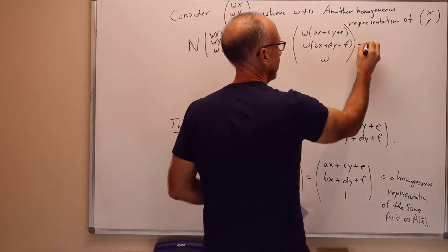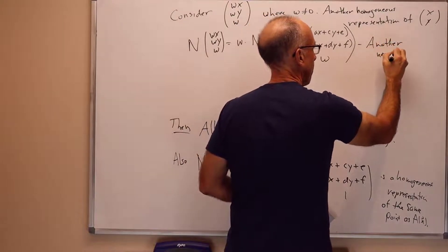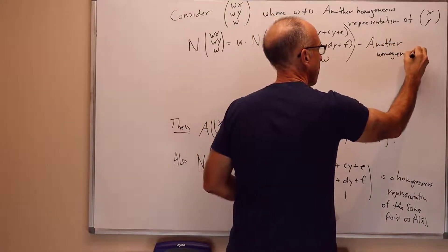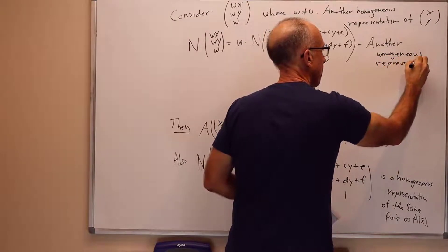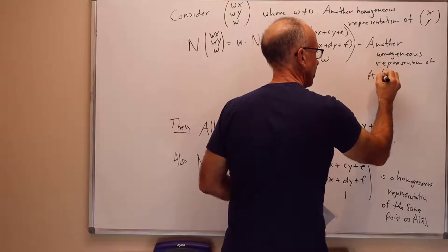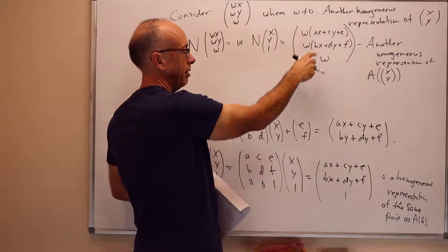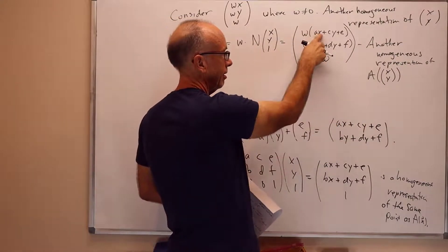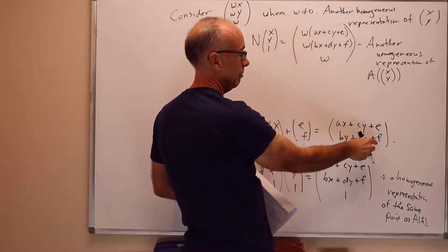And this is another homogeneous representation of the point A applied to x, y. Because, again, if we divide through by the W component, we just get Ax plus Cy plus E, and By plus Dy.